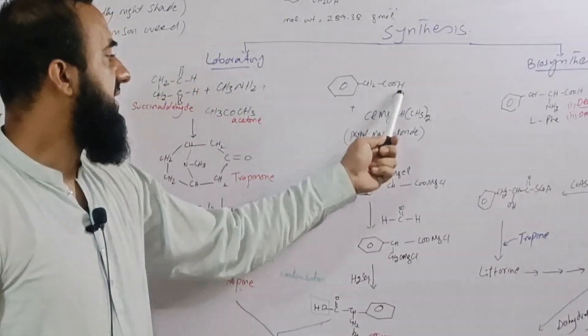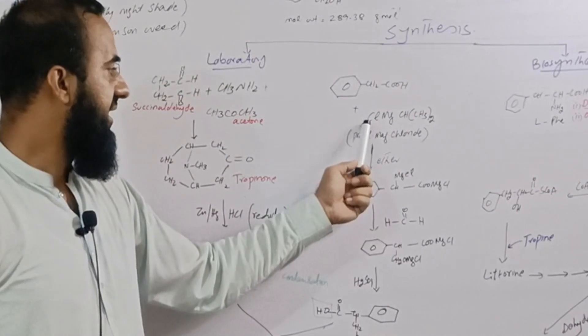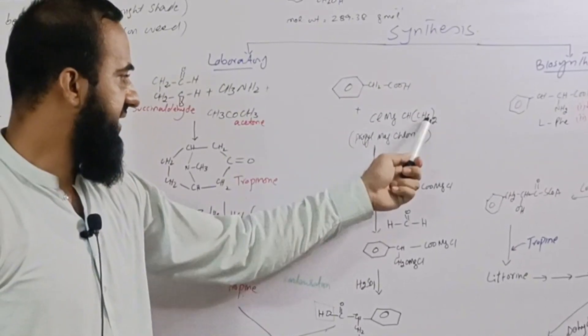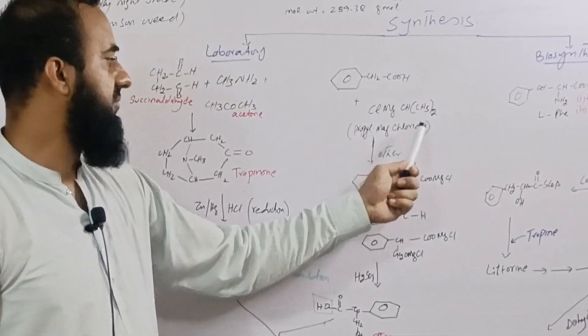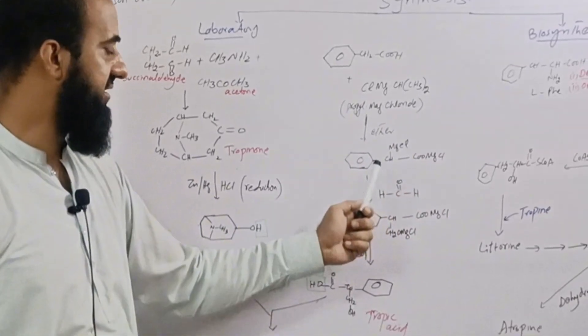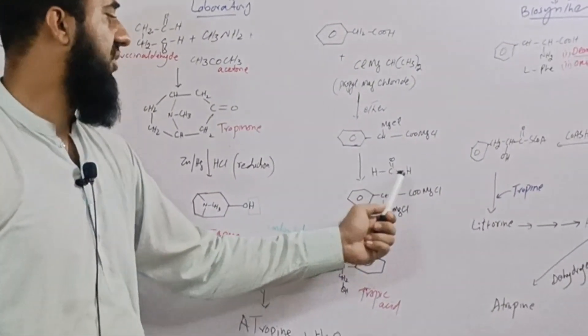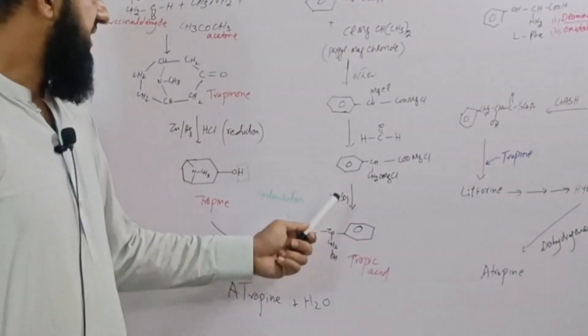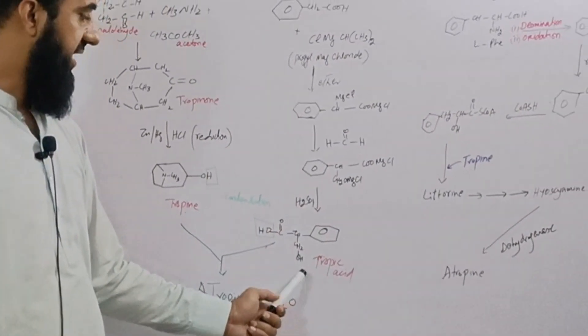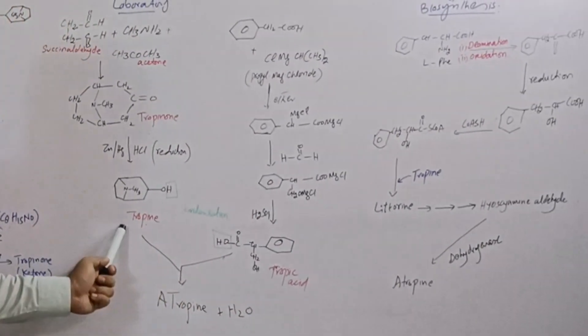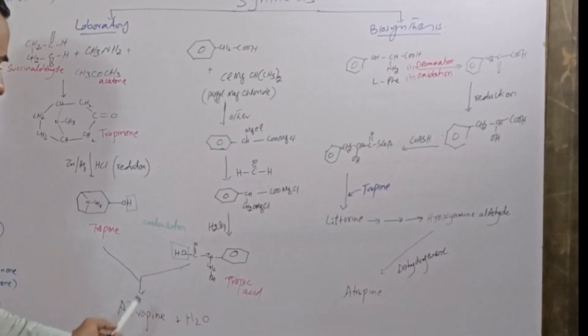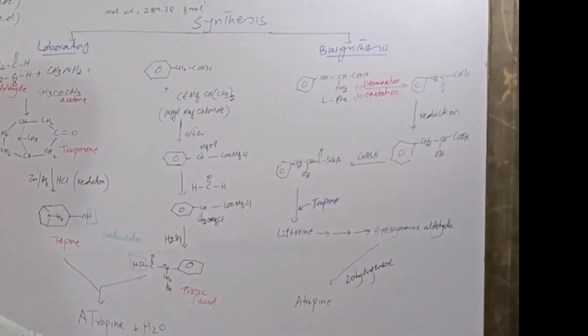Similarly, phenylacetic acid is treated with a kind of Grignard reagent called propyl magnesium chloride to get this structure. This structure is treated with formaldehyde to get this compound which undergoes hydrolysis to give tropic acid. Tropic acid and tropine are condensed to form atropine; water is removed.